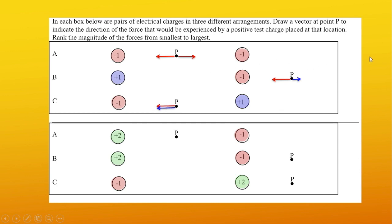Now that we've figured out all the component forces, let's figure out the net force. For the first example, we have one to the left and one to the right — those cancel each other out, so the net force is zero newtons. For the second example, we have a big force to the left and a small force to the right, so the net force points to the left. Lastly, we have two forces pointing to the left — we add those together and get a giant net force pointing to the left.